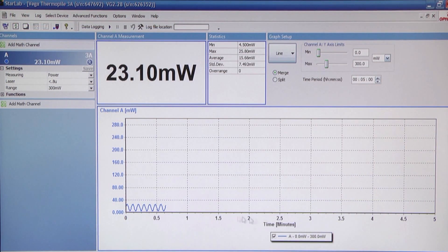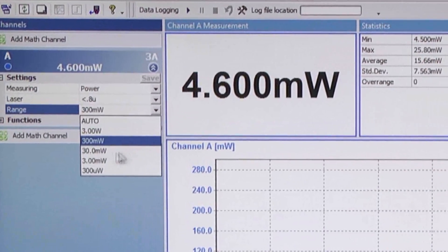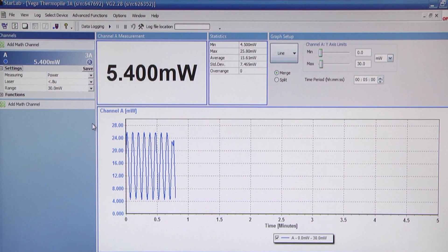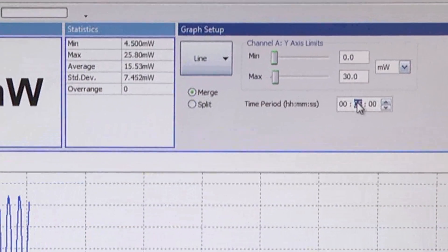Let's adjust the power scale to fit the powers being measured. Let's set the maximum power to 30 milliwatts. We can now clearly see the graph of the power measured. Let's also set the time scale to say one minute so the graph will go faster.